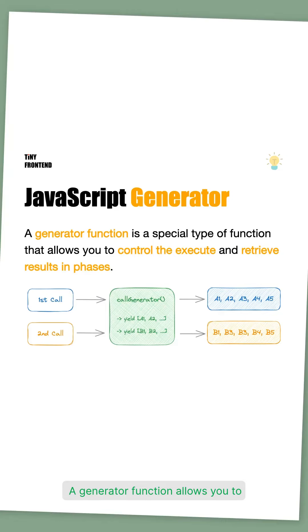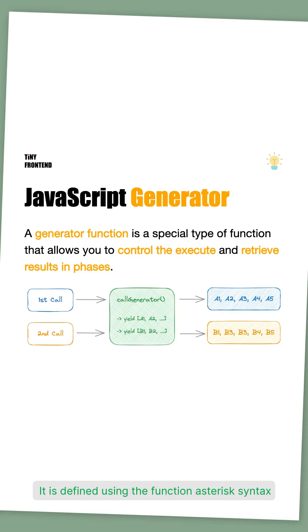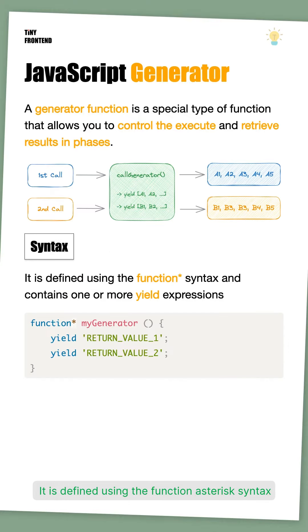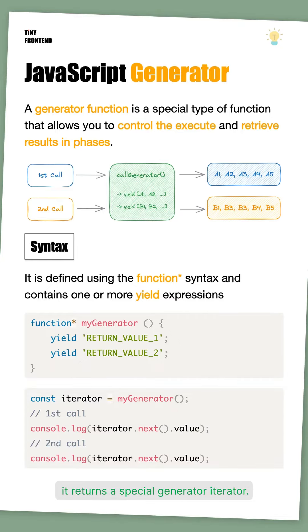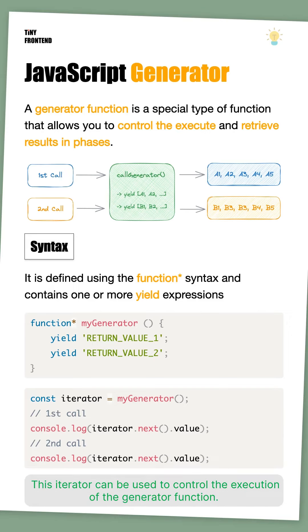A generator function allows you to control the execution and retrieve results in phases. It is defined using the function asterisk syntax and contains one or more yield expressions. When a generator function is called, it returns a special generator iterator. This iterator can be used to control the execution of the generator function.